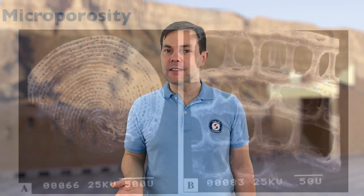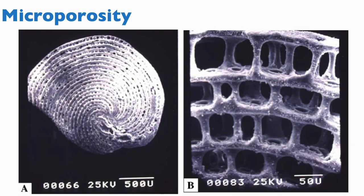One thing not accounted for in the Choquette-Pray classification is micro porosity, because Choquette-Pray is based on thin section and you cannot see micro porosity on thin sections. However, in carbonate grains we can have tremendous amounts of such porosity. For instance, looking at this benthic foraminifer — an Eocene nummulite — if you put it under an SEM you will see that within the framework of the shell itself there is a lot of very small porosity.